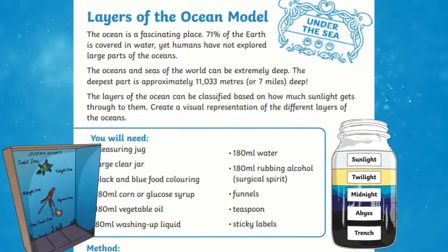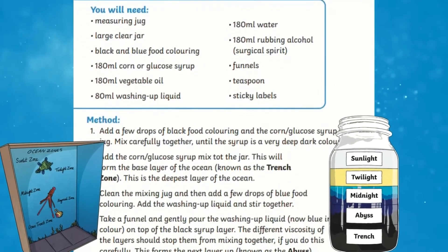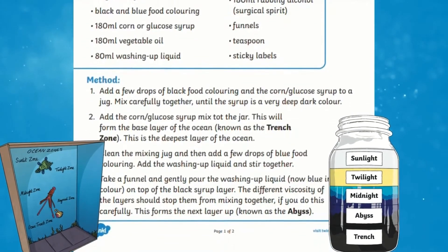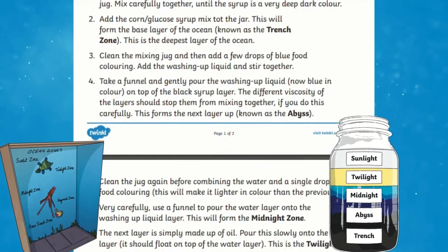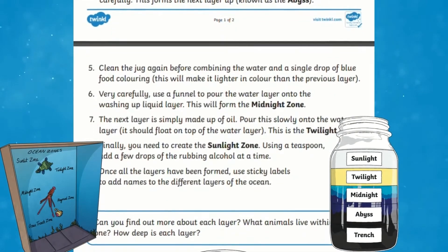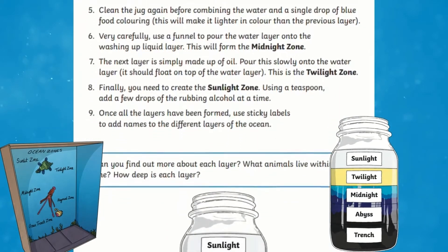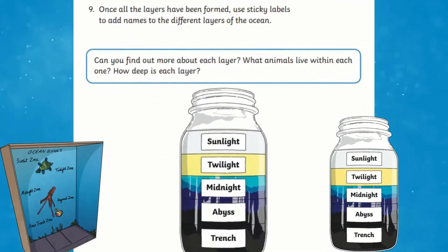You can then encourage your children to make their own layers of the ocean model craft by following these simple instructions. It can help give children a great visual representation of what the different layers are, what they look like and how they are different.